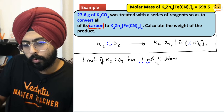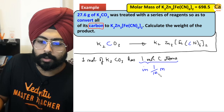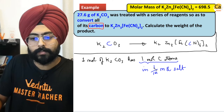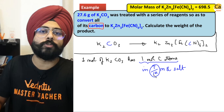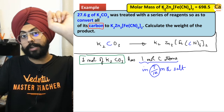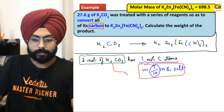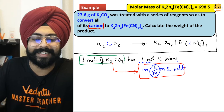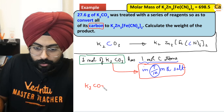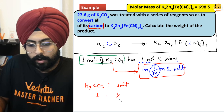One mole of carbon atoms are in 1/12 moles of salt. One mole of K2CO3 has one mole of carbon; one mole of carbon can create 1/12 of a mole of this salt. That is why one mole of K2CO3 will give rise to 1/12 of a mole of this salt. The ratio is 1 to 1/12.